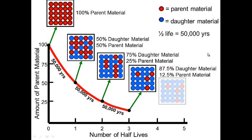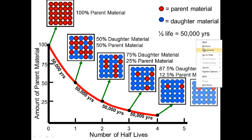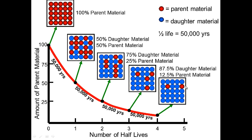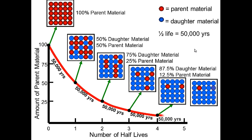After four half-lives — 200,000 years — I can see about 6 percent parent material and 94 percent daughter material remaining. After five half-lives there is almost none of the parent material left; it's almost entirely daughter material.